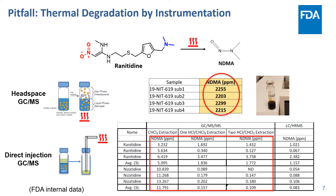The NDMA measured with headspace GC-MS was over 2000 ppm compared to sub-ppm with LC-MS. So in this case, although both GC-MS and LC-MS are capable techniques for NDMA analysis, LC-MS is more suitable because it does not involve a heating process until after the separation of ranitidine from NDMA.